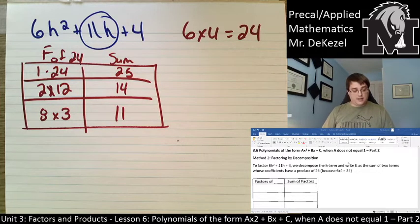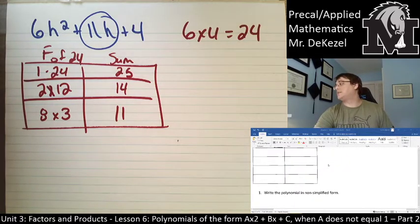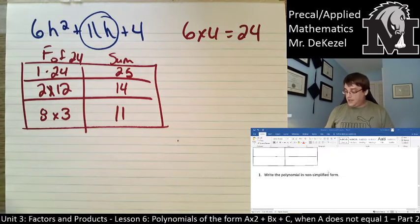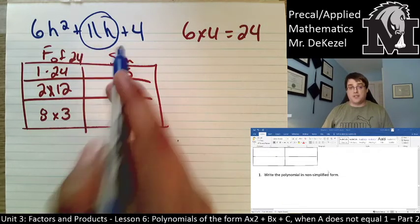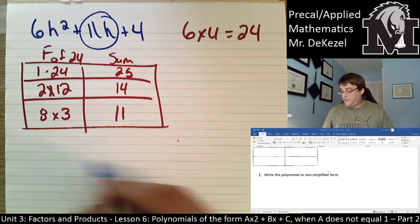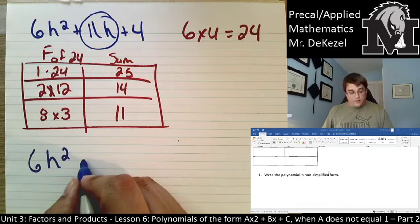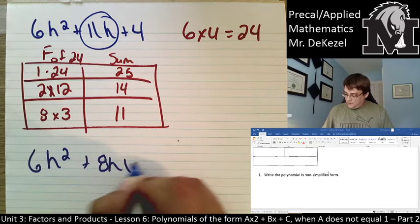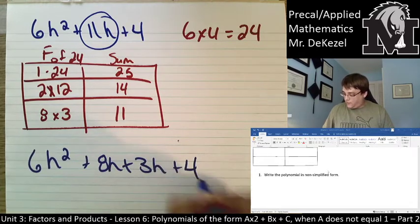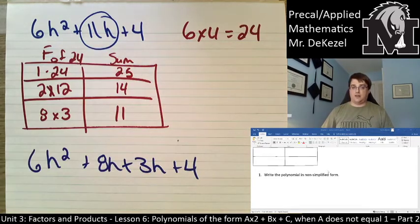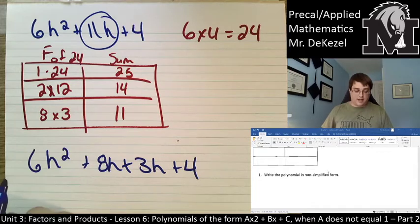In the first box, if we scroll down, we can see we're going to write the polynomial in the non-simplified form. So, what that means is we're going to be decomposing this 11 in this form here. So, after number 1, we'll write 6h squared plus 8h plus 3h plus 4. Now, 8h plus 3h is the same as 11. We haven't changed anything, just changed how we write it.